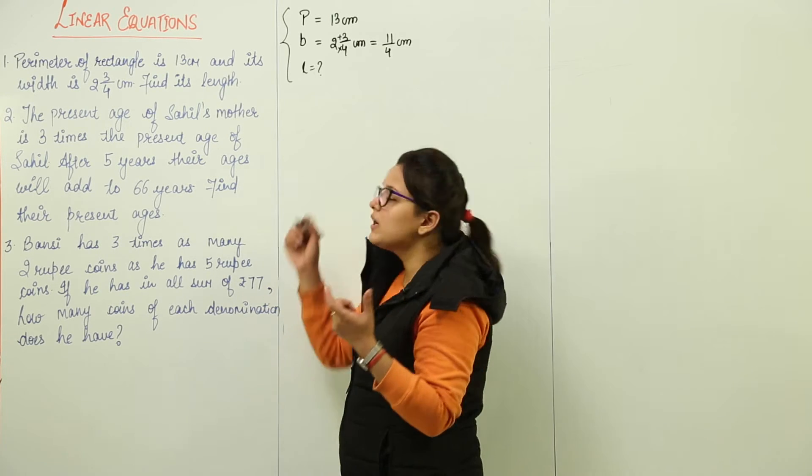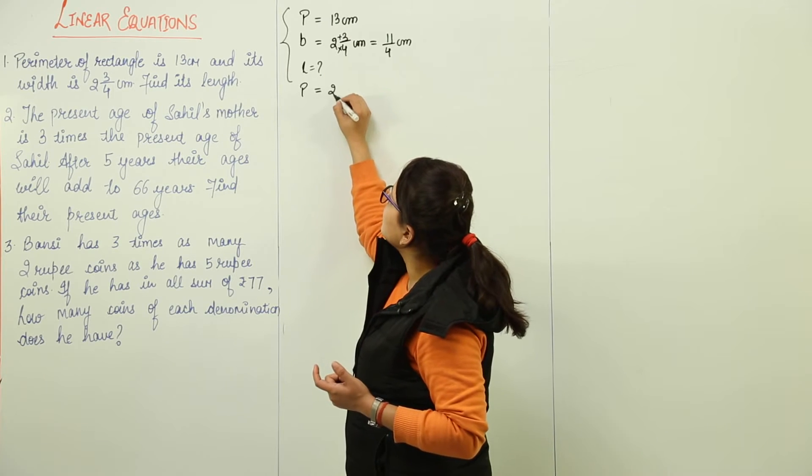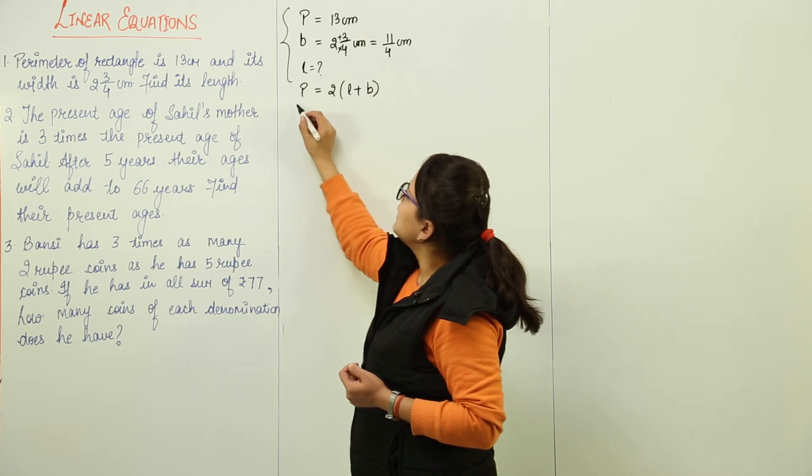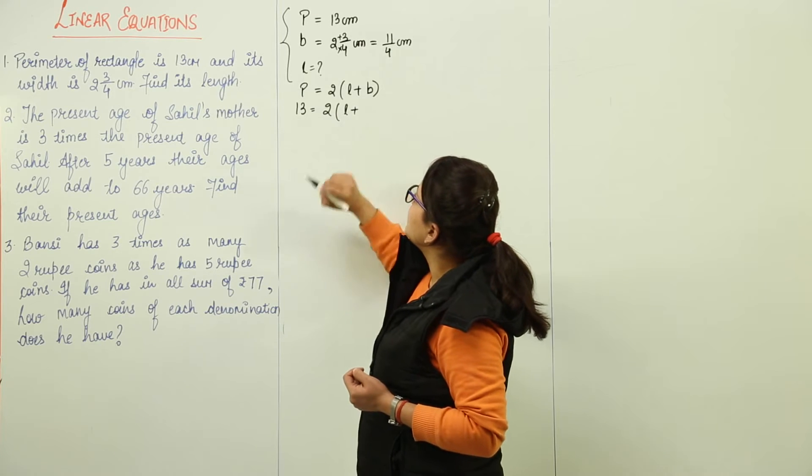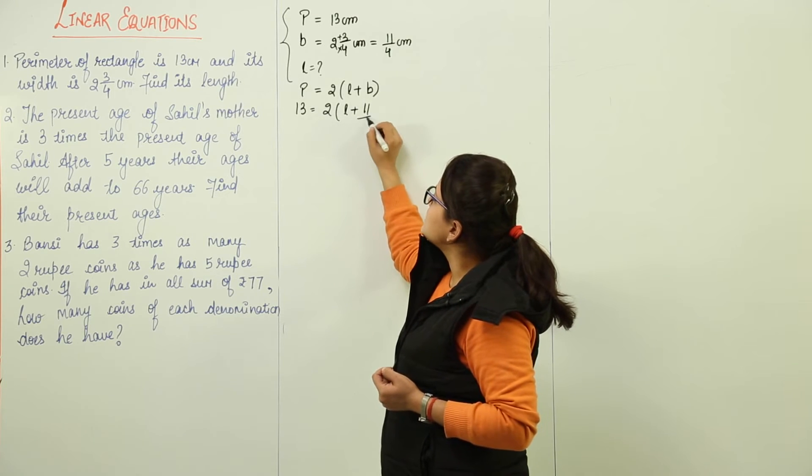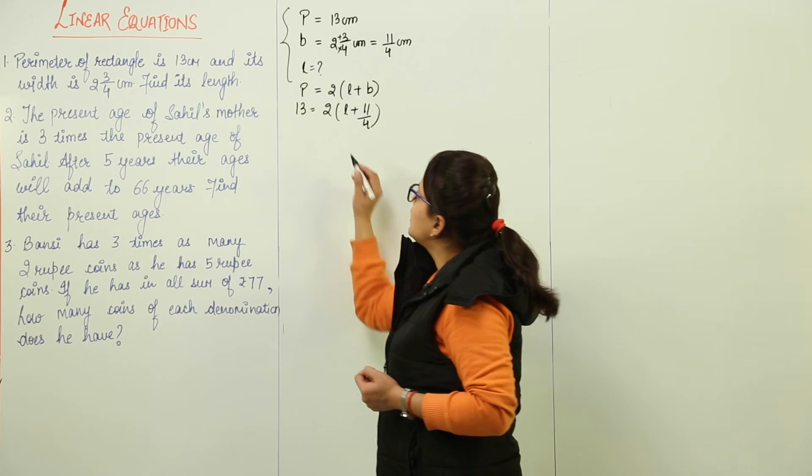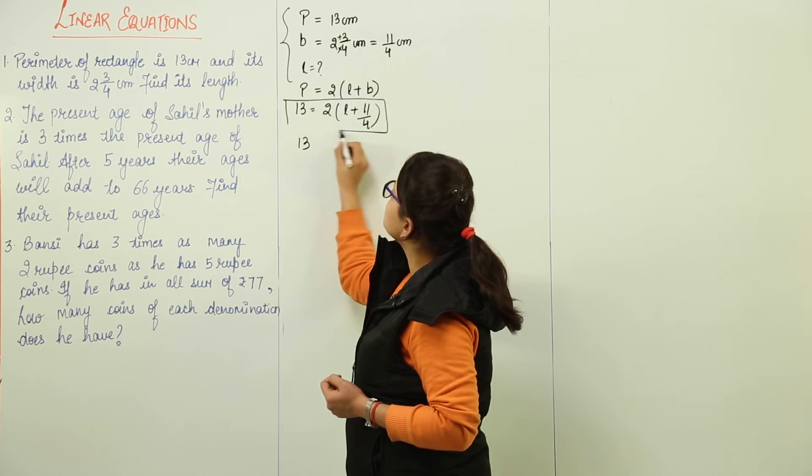Definitely there is one formula which includes all these three which is perimeter of rectangle equals 2 into L plus B. Now perimeter is 13 and length is what we have to find. So now I place the breadth as it is. This forms my linear equation. The linear equation can be solved as we have been solving all the questions previously.